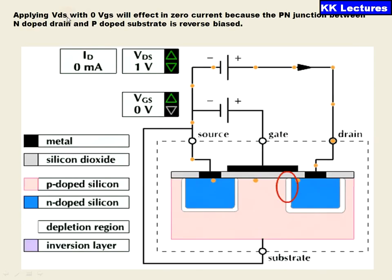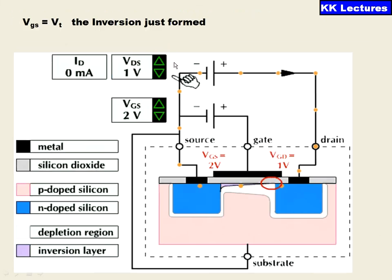Applying VDS with zero VGS means I am applying a little bit of VDS value as one volt and keeping VGS as zero and increasing the VDS. If VDS is increased, this is reverse biased, so naturally the depletion region will increase.